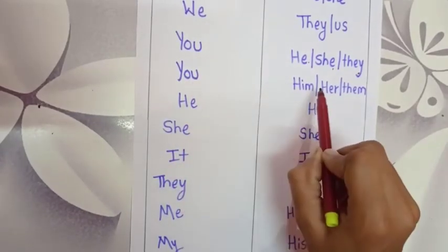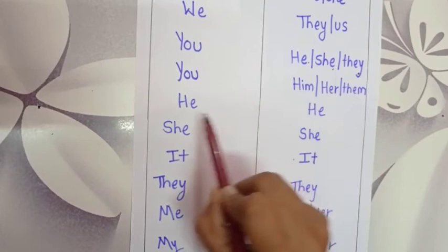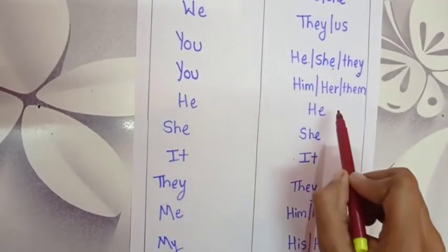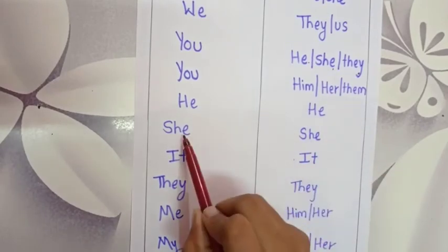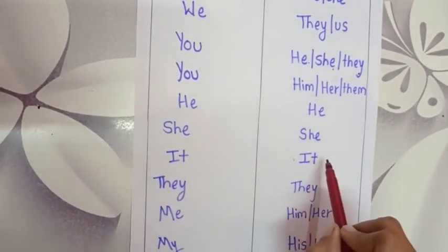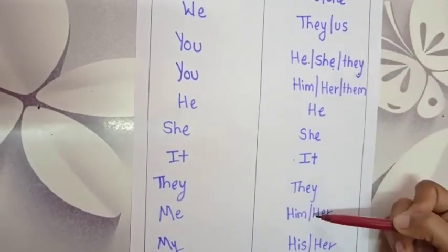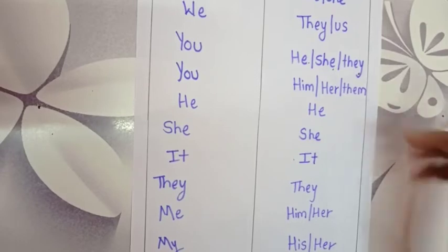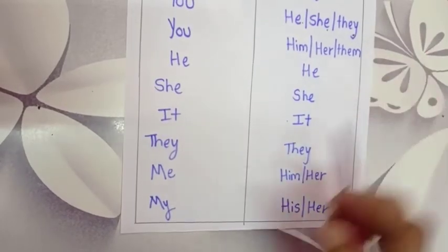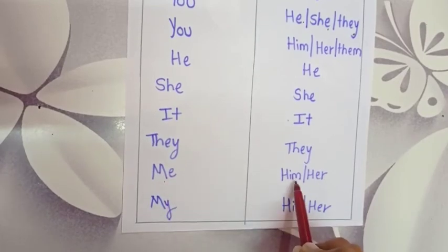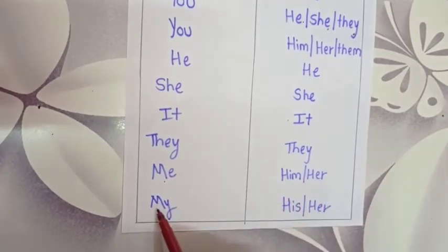Also, 'you' as an object should be converted to 'him', 'her', or 'them'. 'He' from the direct sentence is converted to 'he' — it should be kept as it is. 'She' should be kept as it is. This chart is for the pronouns. 'They' should be converted to 'they'. 'Me' should be converted to 'him' or 'her'. And 'my' should be converted to 'his' or 'her'.